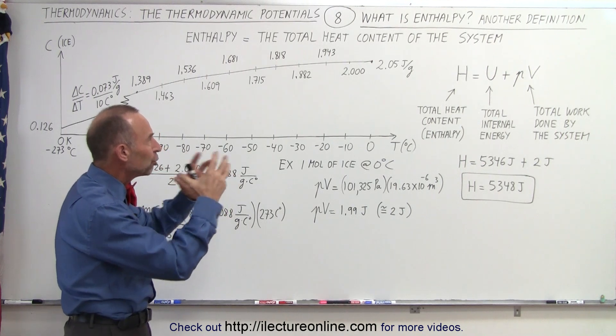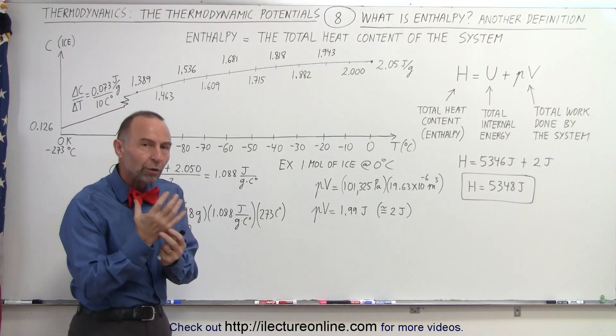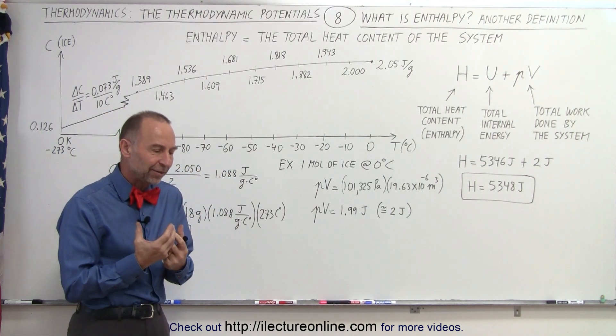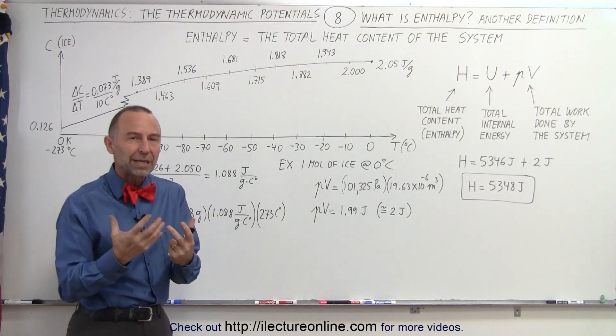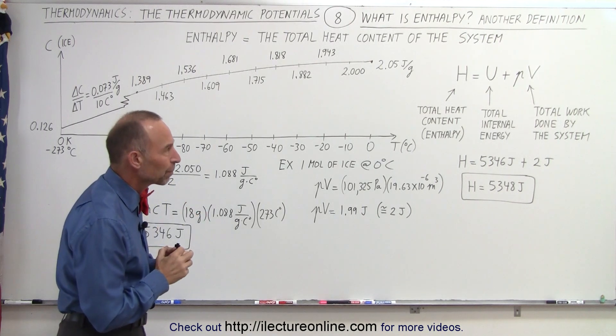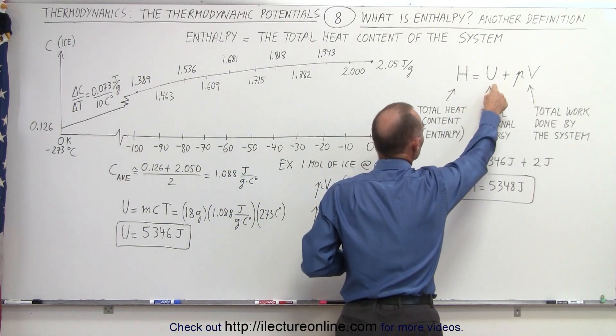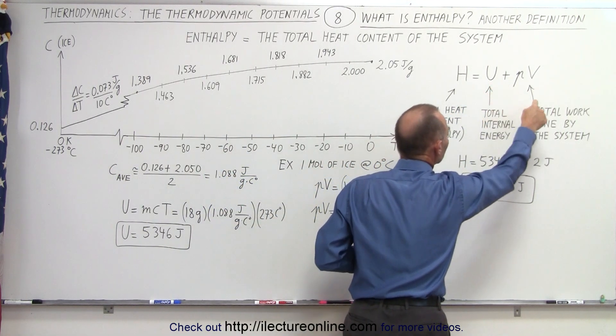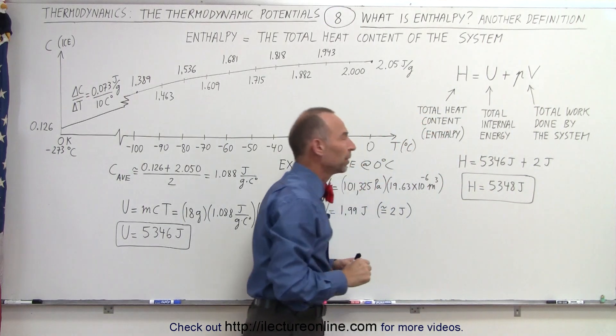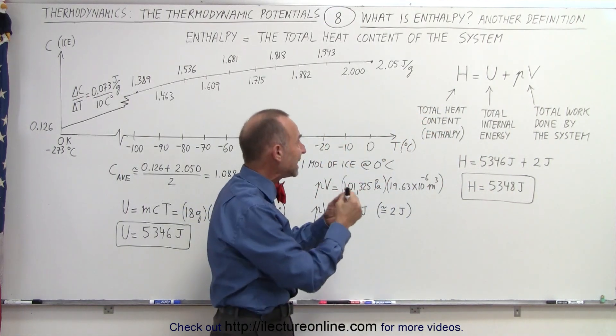So let's say we have a cube of ice, one mole of ice which is 18 grams, and we want to know the enthalpy of that cube of ice. Well, the definition tells us that enthalpy is equal to the total internal energy plus the work done by the system. That gives us the total heat content.